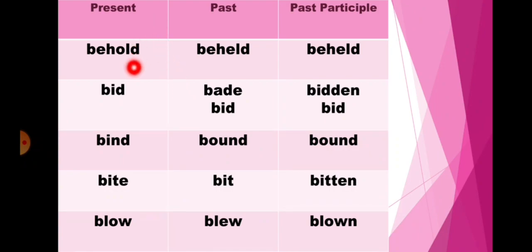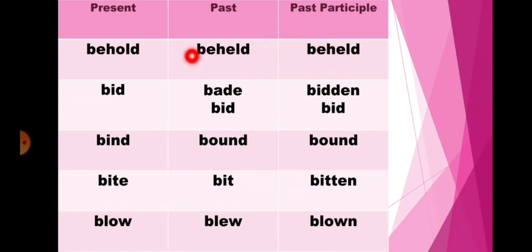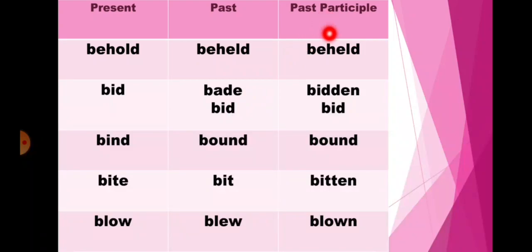In present if it is behold, then in past it will change into beheld, and past participle also beheld. In present if it is bid, then in past either you can write bid and past participle bidden, or you can write bid and past participle also bid.